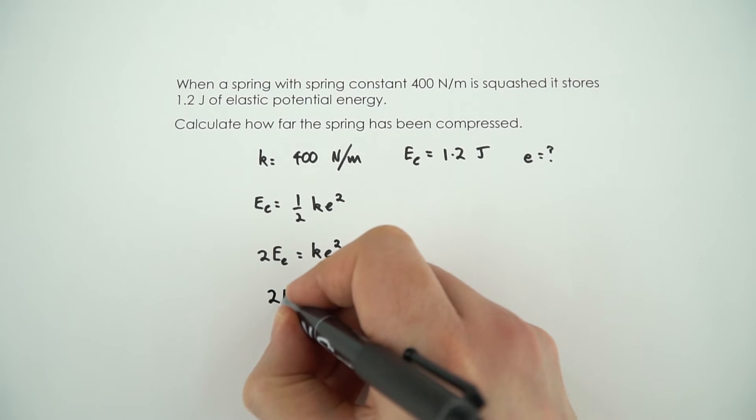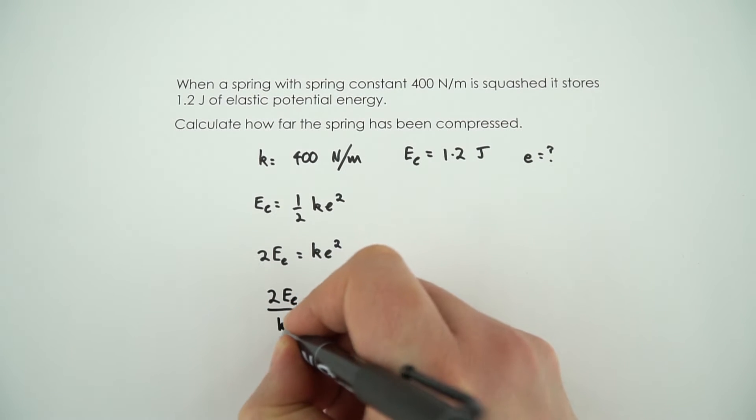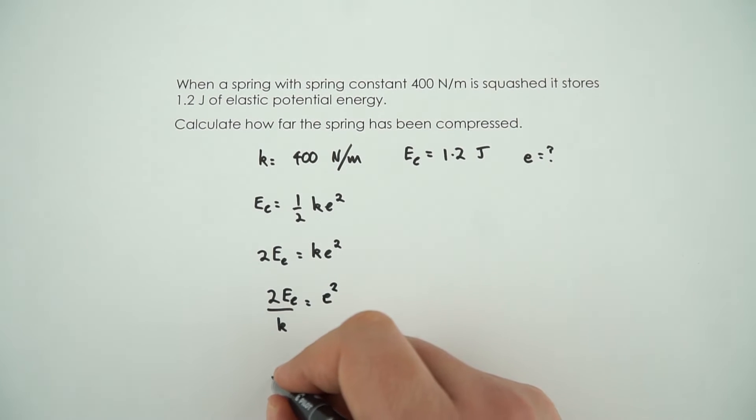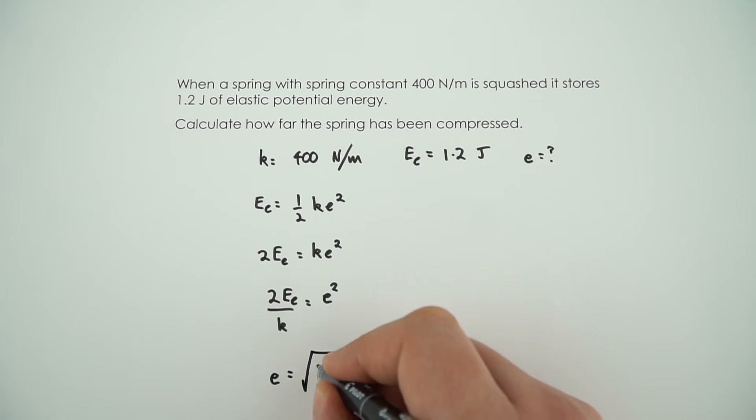Then we can say that 2EE over K is equal to E squared, and I'm going to square root both sides, and then say that E is equal to the square root of 2EE over K.